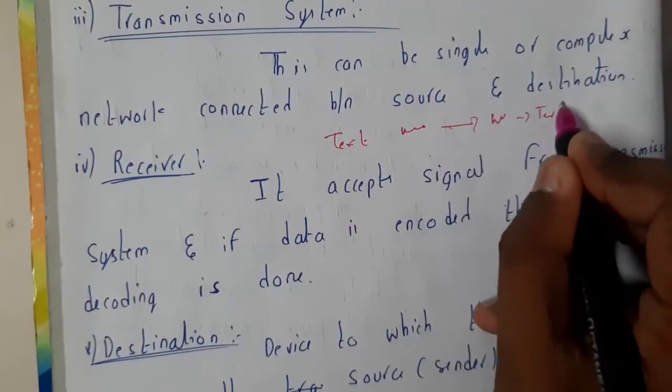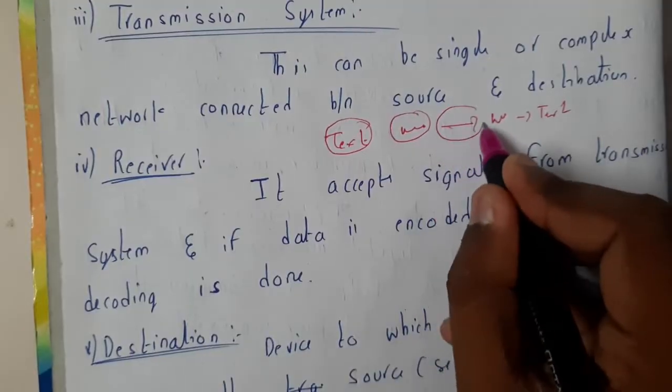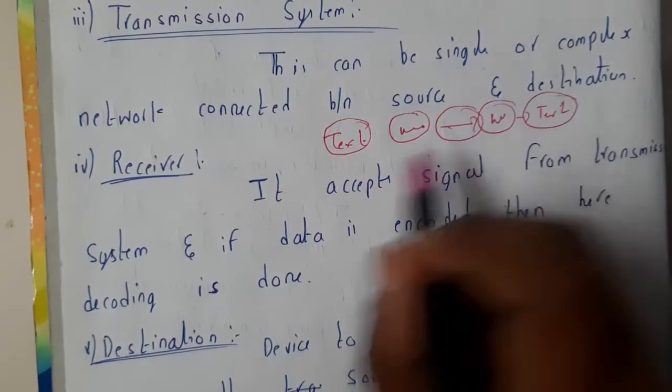This is your source, this is your transmitter, this is your transmission system, this is your receiver, and this is your destination address or final value.